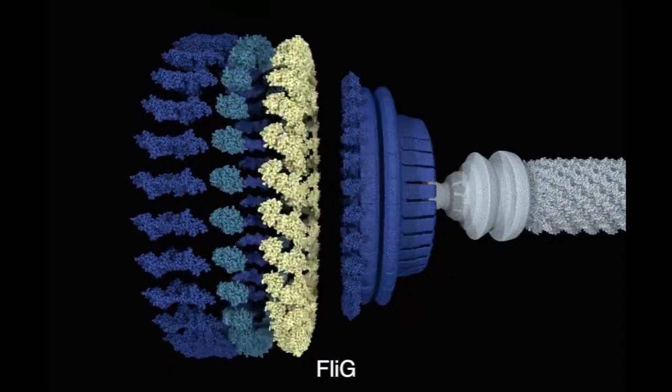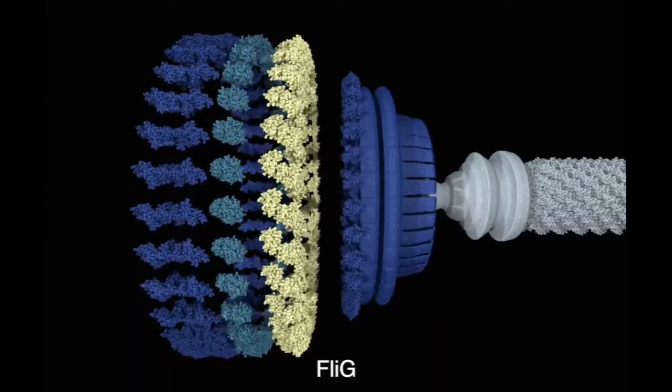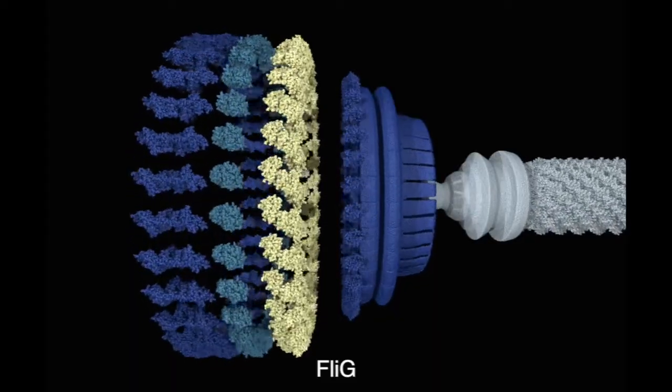Onto this, the FliG ring forms, which is responsible for switching the direction of the motor, causing either runs or tumbling.